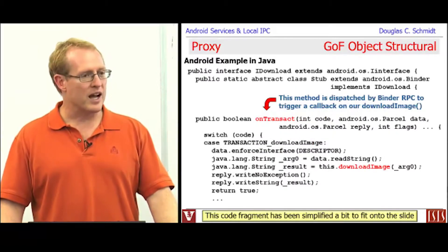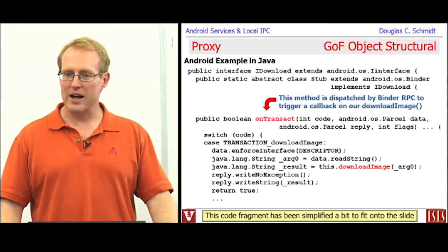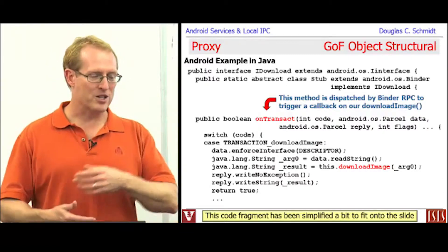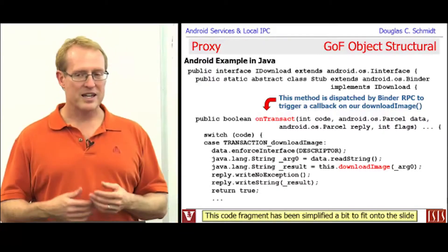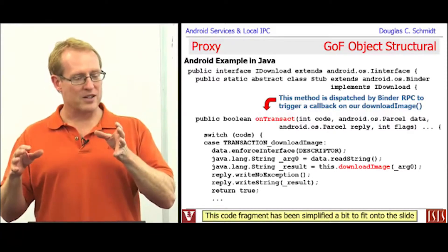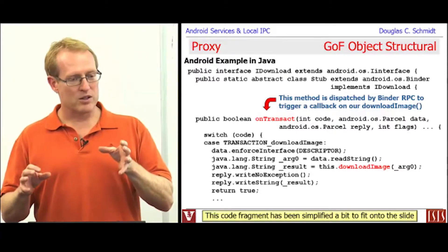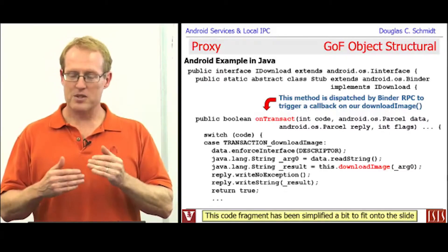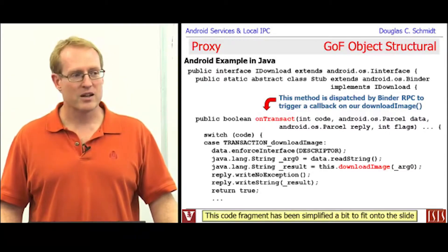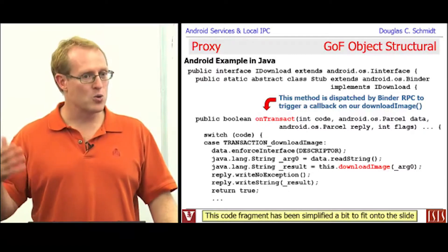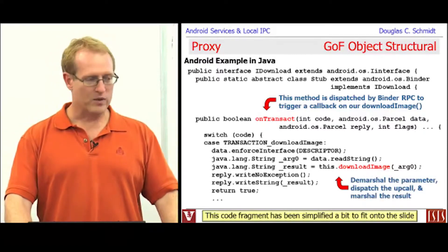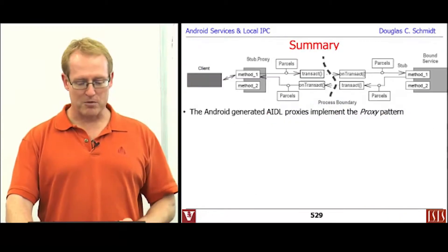The other side ends up being a callback on a method called onTransact, and that's the one that does the inverse operation from the proxy. That's the one that pulls all the various pieces out of the message, turns them back into strongly typed data types, and then passes them as an upcall to the implementation method that you define in your subclass of the stub class. So we've talked about that stuff before, so I went through it quickly.